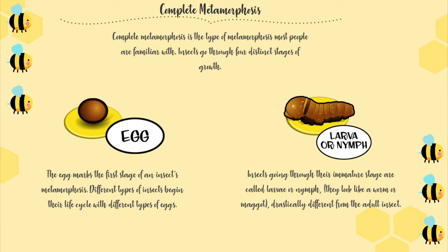Complete metamorphosis. Complete metamorphosis is the type of metamorphosis most people are familiar with. Insects go through four distinct stages of growth. Egg: the egg marks the first stage of an insect's metamorphosis. Different types of insects begin their life cycle with different types of eggs. Larva or nymph: insects going through their immature stage are called larvae or nymphs. They look like a worm or a maggot, drastically different from the adult insect.